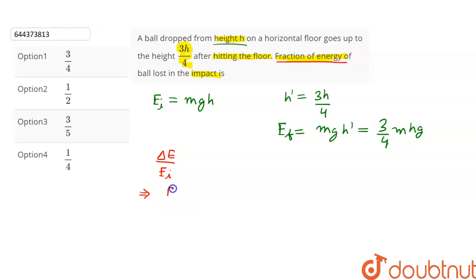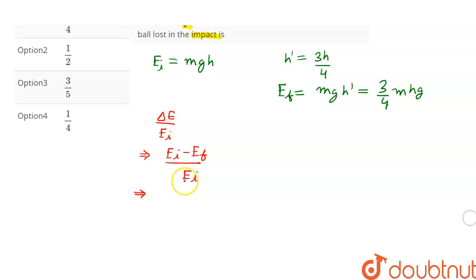in energy is Ei minus Ef divided by Ei. So let's substitute the values. This will give us: mgh minus 3/4 of mgh, divided